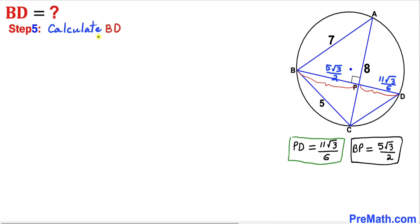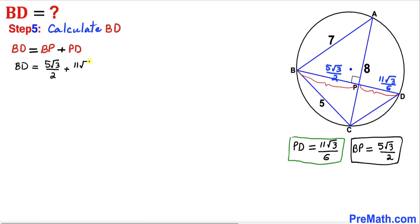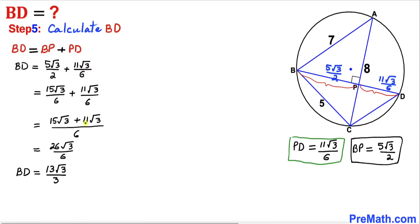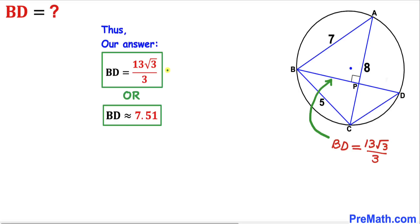Here's our final step. BD = BP + PD = 5√3/2 + 11√3/6. Adding and simplifying these two fractions, BD = 13√3/3, which is approximately equal to 7.51 units. Thanks for watching and please don't forget to subscribe to my channel for more exciting videos.